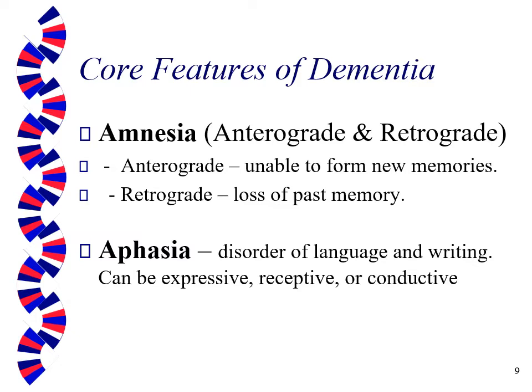Core features of dementia — amnesia: anterograde and retrograde. Anterograde is the one that goes first — that's the ability to form new memories. You'll be surprised sometimes: their long-term memory is very good, but they won't be able to tell you what happened earlier today or yesterday. The ability to form new memories is the first part that goes, followed by past memory. You might notice at the Alzheimer's clinic that they have old magazines around — that's to stimulate long-term memory in patients.